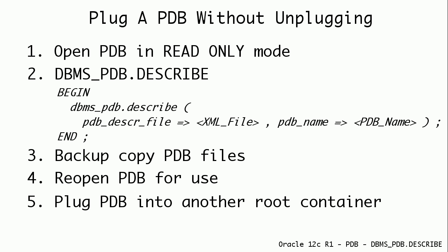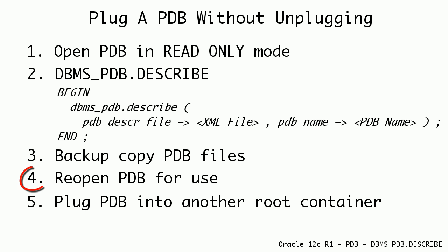Let us look at the steps for using the DBMS_PDB package. First, we have to open the PDB in read-only mode. Then we can use the DBMS_PDB describe procedure, which accepts two parameters: the XML file name along with path, and the PDB name. This procedure will create an XML file containing all the details about the pluggable database. Then we have to copy PDB-related data and temp files to a temporary location. Then we can reopen the PDB in read-write mode for users to continue using it.